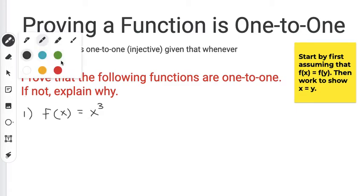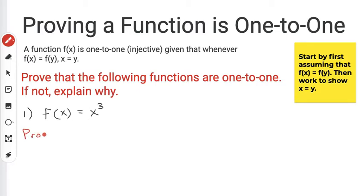I'm going to change to red and write a proof of this because I want to prove that this function is indeed one to one. So we're going to start off by assuming that f(x) equals f(y). So what would that mean?